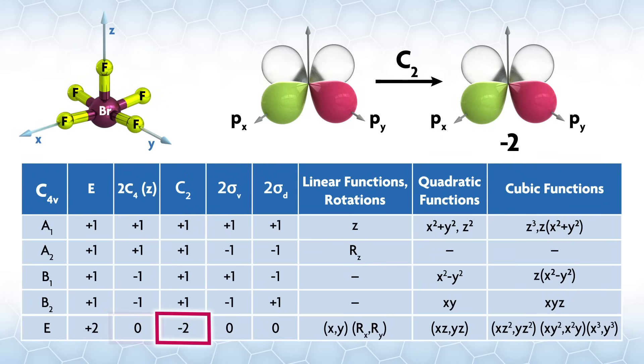The next operation is C2, which leaves the p orbitals where they are, but inverts the phases. Because of the phase change, we give each orbital negative one, so negative two overall.